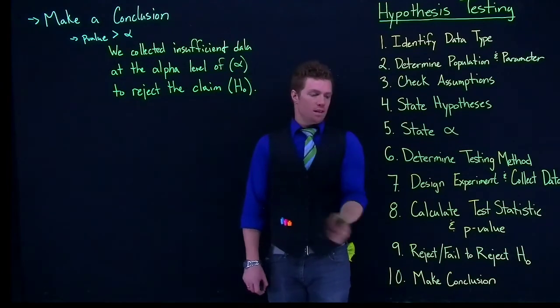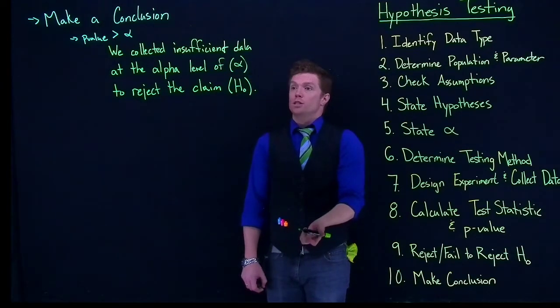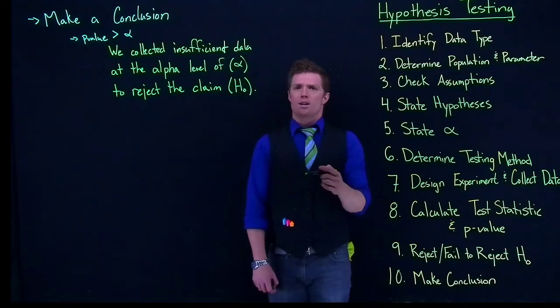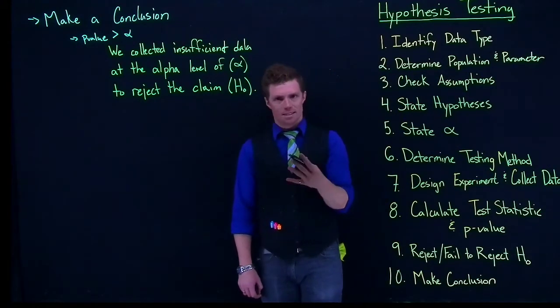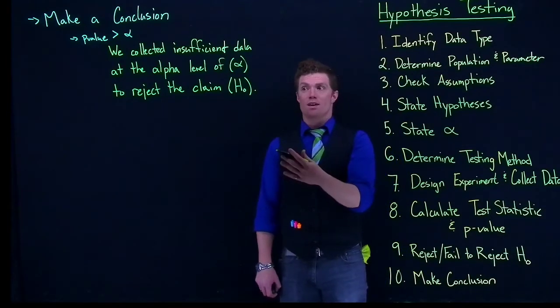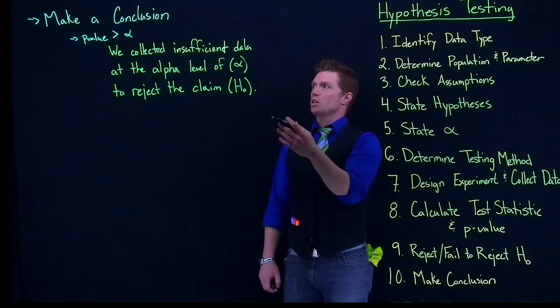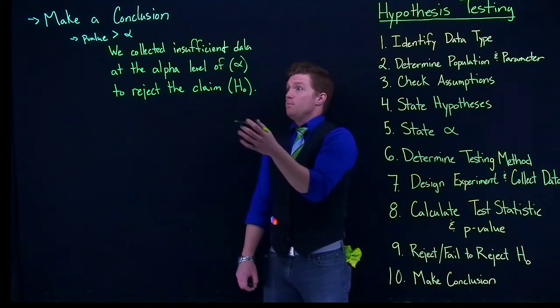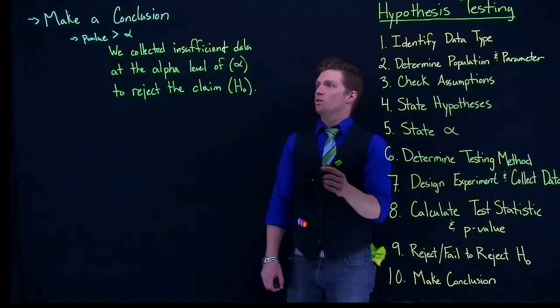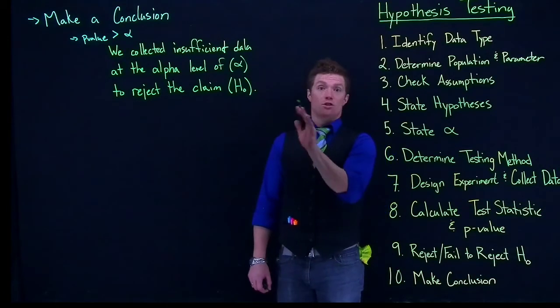And this is the same thing as saying that we basically failed to reject the null hypothesis. There are some other ways that we can rewrite this. And we also need to include our test statistic and our p-value, basically in APA format, so that we have it in our conclusion. But essentially, if we fail to reject the null hypothesis, then that's all that we have to do.